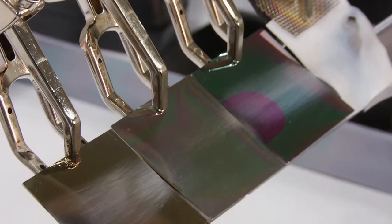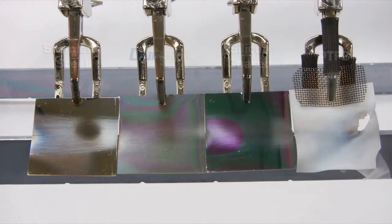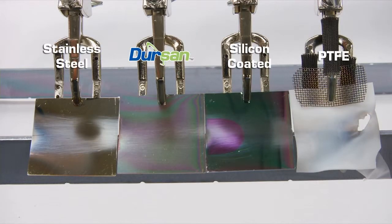The Dursan coated coupon resists scratches and wear, while the stainless steel, PTFE, and silicon coupons are readily scratched.